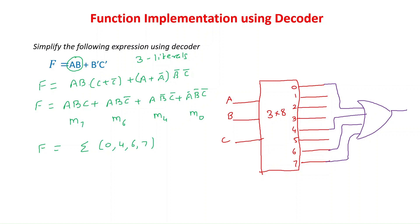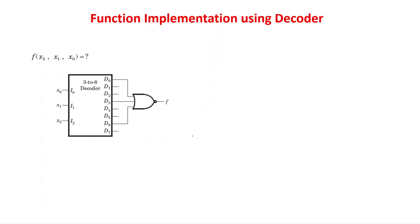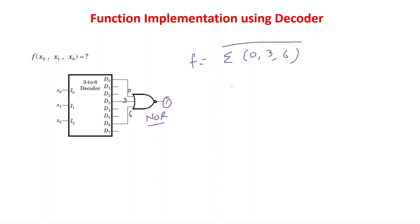So those are the two problems we have seen. One more problem: we need to find the function for a given circuit. This is a 3×8 decoder and the inputs to the gate are min terms 0, 3, and 6, but here the gate is a NOR gate, not an OR gate. So the function is equal to the sum of 0, 3, 6 — complemented. This means sigma(0, 3, 6) complement, which can be written as pi(0, 3, 6), and this is the product of max terms.